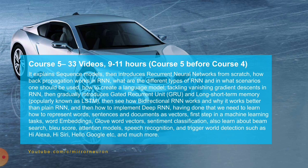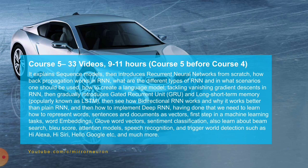Course 5 covers natural language processing and sequence models. It introduces recurrent neural networks (RNNs), gated recurrent units (GRUs), long short-term memory (LSTM) networks, bidirectional RNNs, and deep recurrent neural networks. You also learn how to represent words, sentences, and documents as vectors — word embeddings, GloVe word vectors, and sentiment classification. Advanced topics include beam search, BLEU score, attention models, speech recognition, and trigger word detection — the technology behind Hey Siri, Hi Alexa, and Google Assistant.